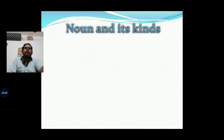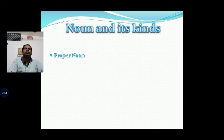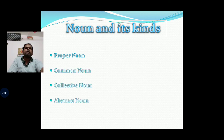Now, Noun and its kinds. There are five kinds of Noun: Proper Noun, Common Noun, Collective Noun, Abstract Noun, and Material Noun.